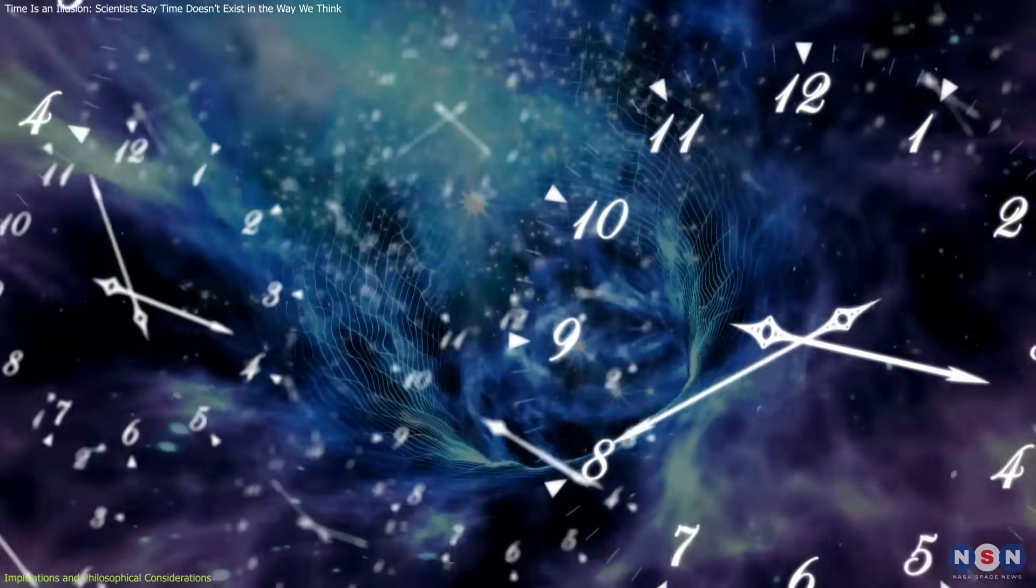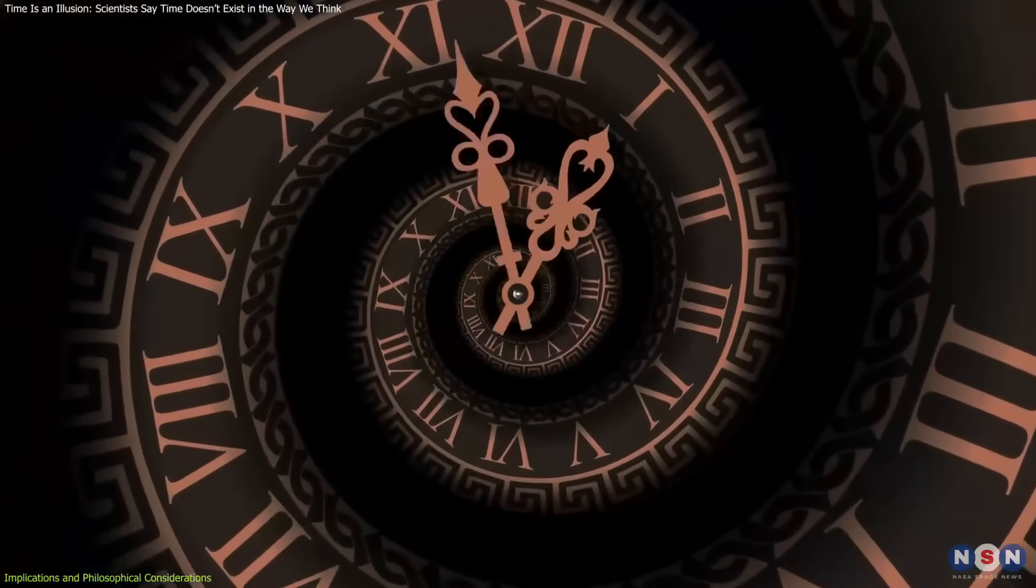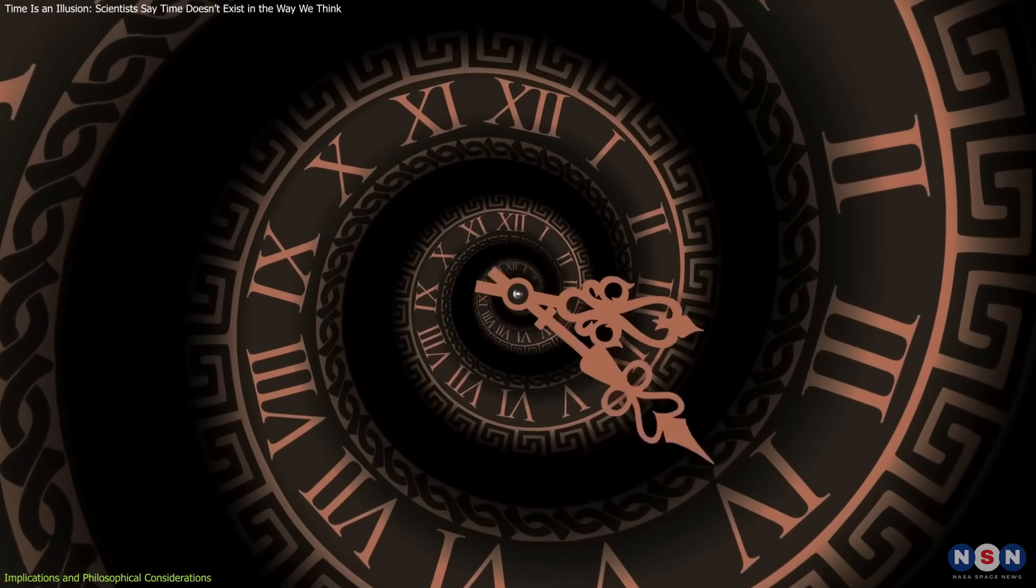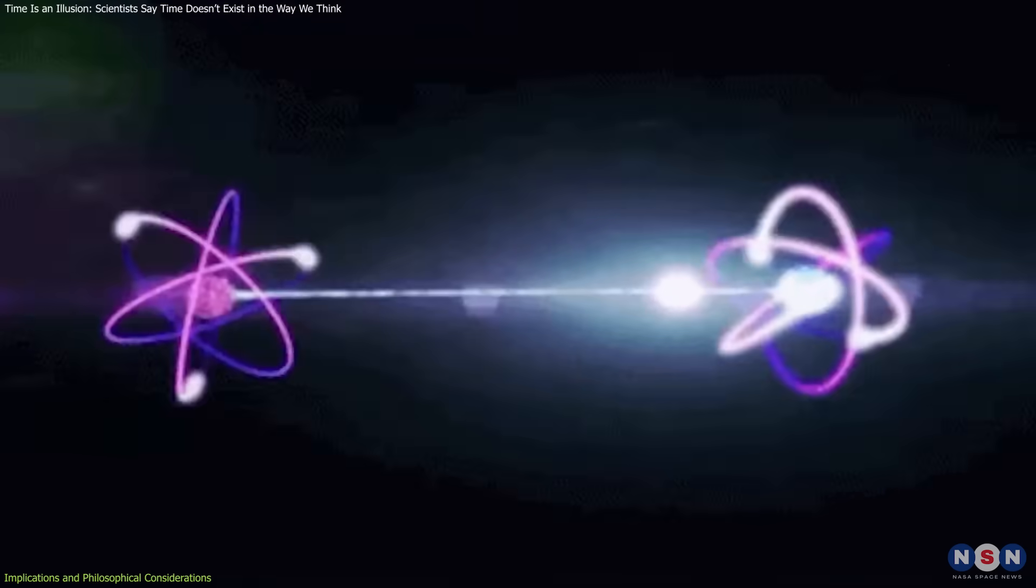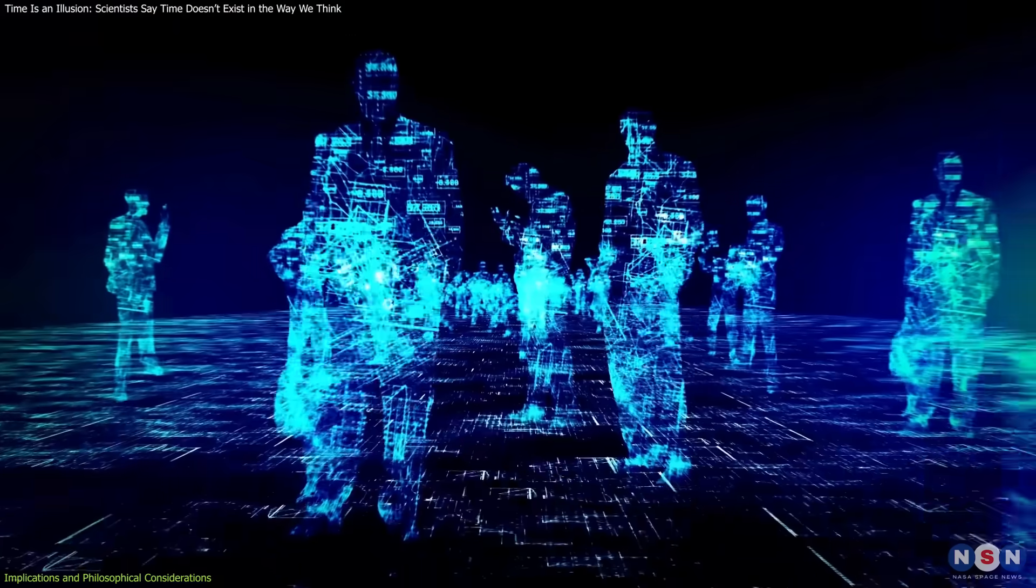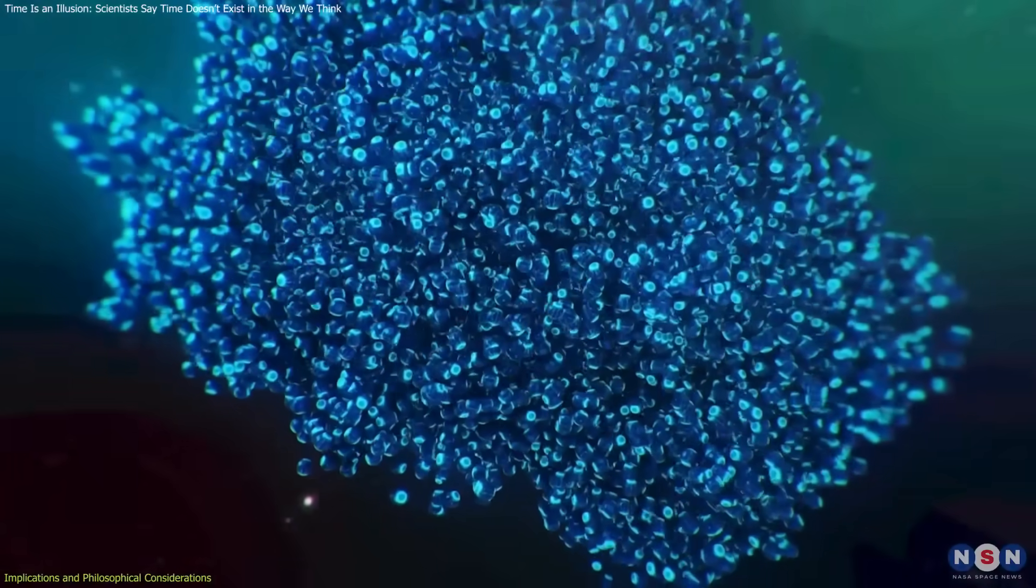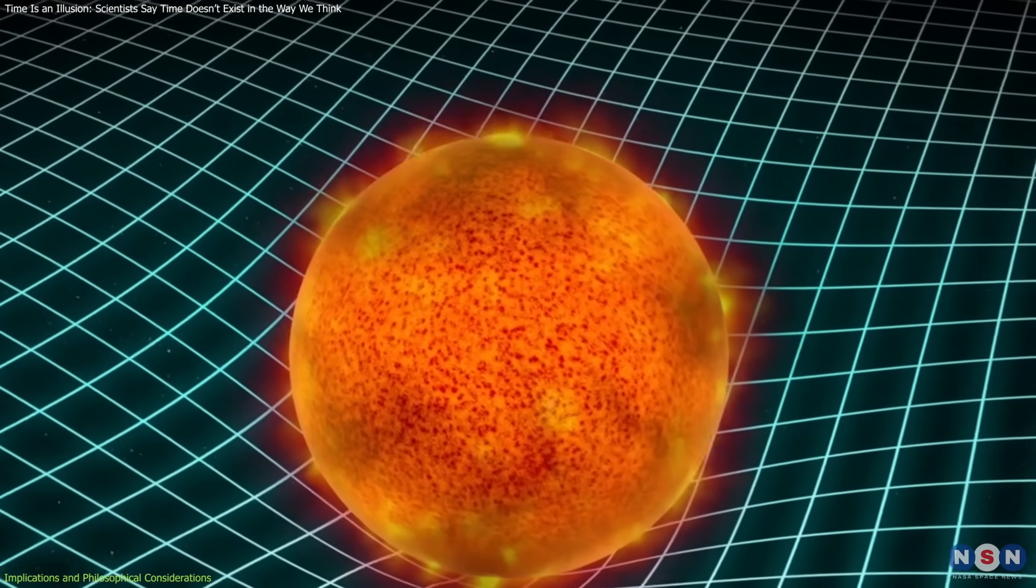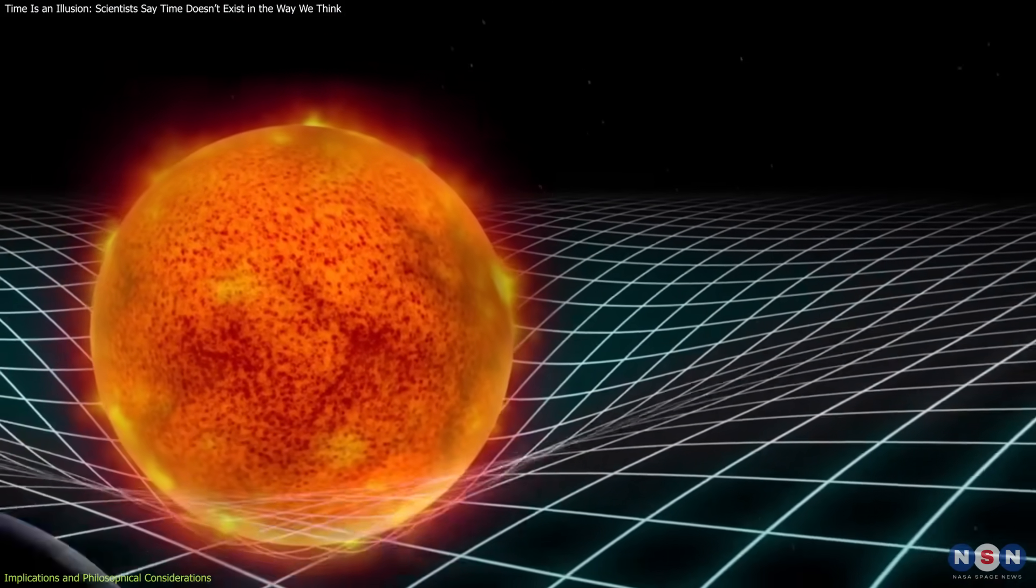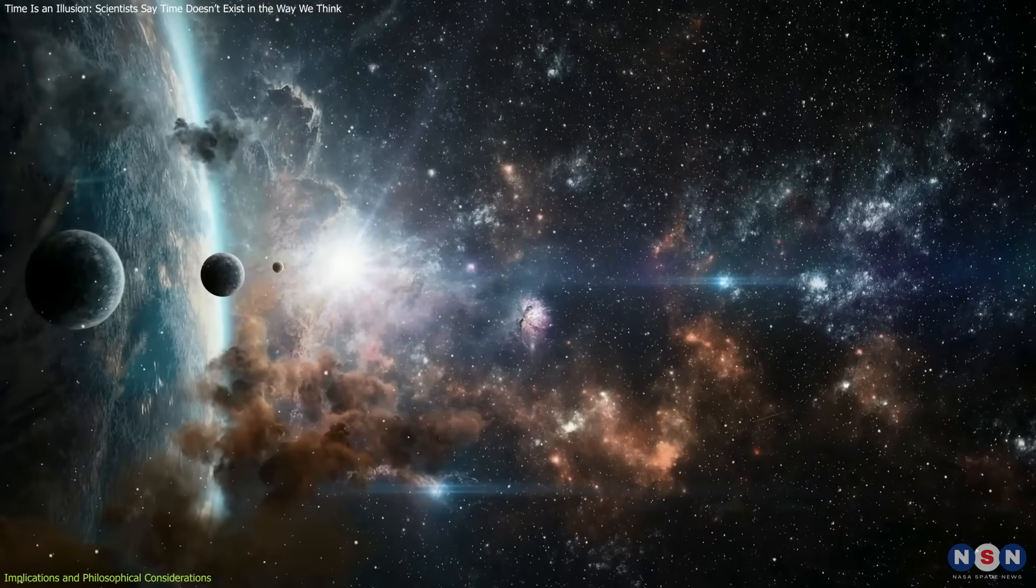Traditionally, reality is seen as a sequence of events unfolding in time, a progression from the past through the present and into the future. However, if time emerges from quantum correlations, then reality might be more like a static block where all moments co-exist, and our perception of now is a construct of our minds. This view aligns with Einstein's relativity, which posits that all points in space-time are equally real, eroding the idea of a universal present.